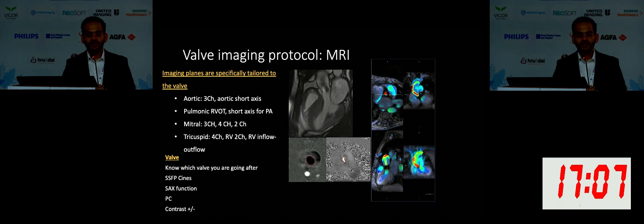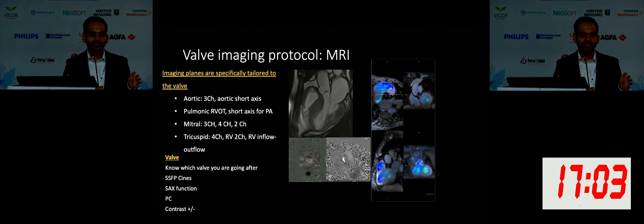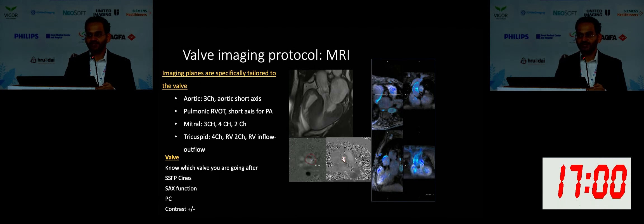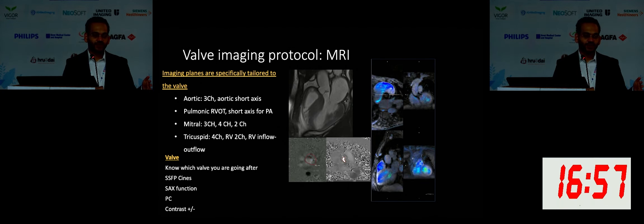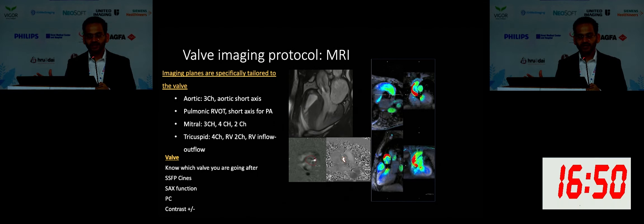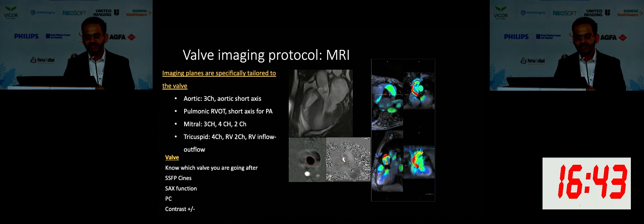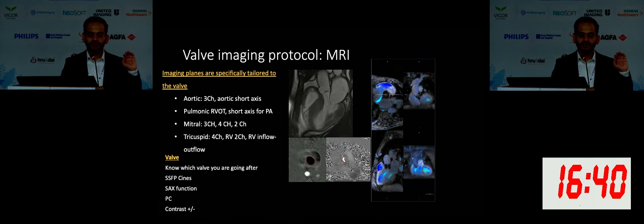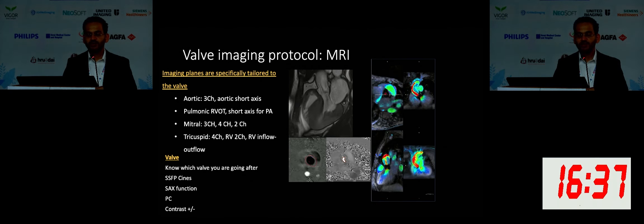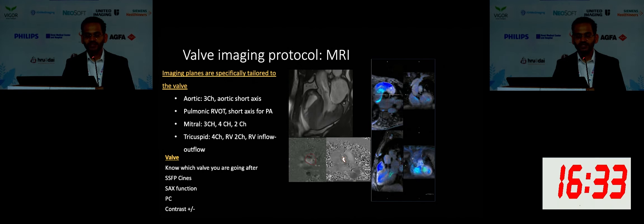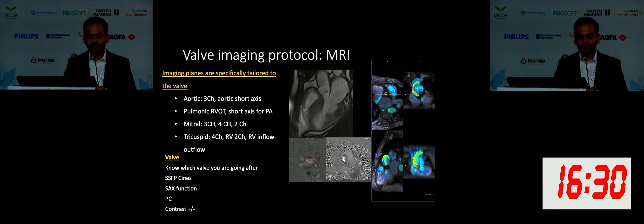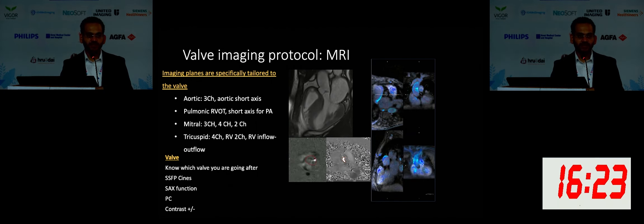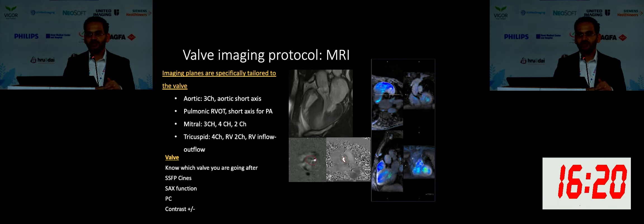With regards to MRI, I always tell my fellows: do not do every sequence on every single patient — that is a waste of time. Please note what valve you are going after and tailor your protocol based on that. I've shown examples of a case with aortic stenosis. You can see examples of a three-chamber view where you can see flow acceleration across the aortic valve. For aortic valve, three-chamber and short-axis views work very well. Phase contrast imaging gives you a good hemodynamic assessment of aortic stenosis — you can calculate the velocity and the gradient.